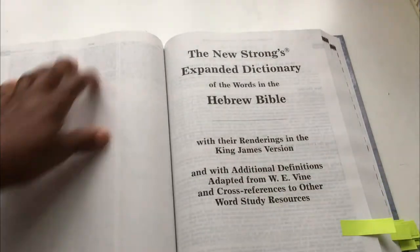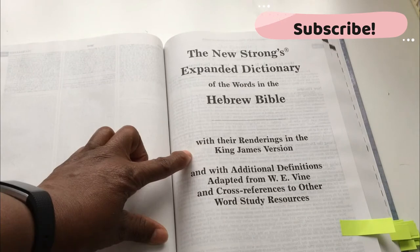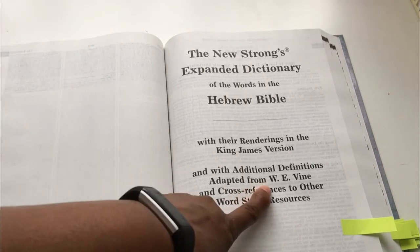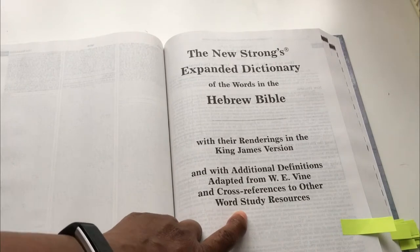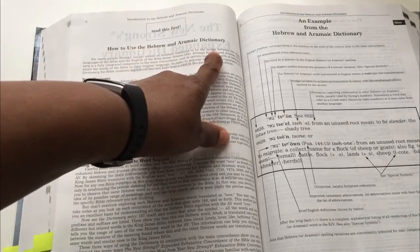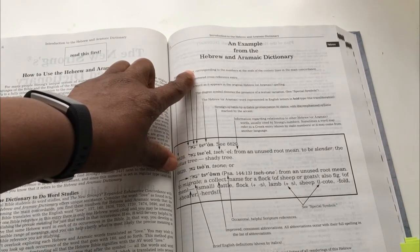The next section is the New Strong's Expanded Dictionary of the Words of the Hebrew Bible with their renderings in the King James Version, with some adaptations from Vine's and cross-references to other word study resources. It gives you an explanation on how to use this section, so it encourages you to read 'How to Use the Hebrew and Aramaic Dictionary' first. It then shows you a worked example from the dictionary and breaks it down so you know how to use it.